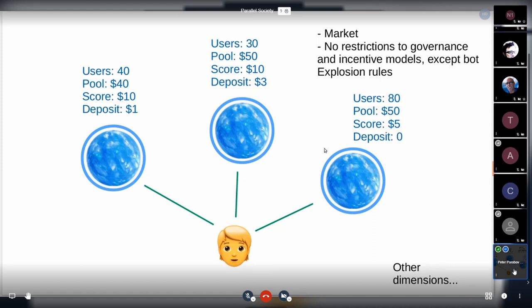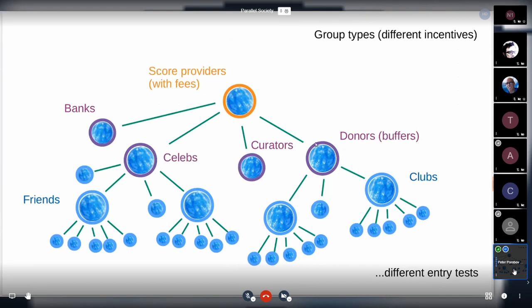This absence of restrictions creates a market where groups can choose any incentive or governance model that they like. Basically the only restriction that Upala imposes on groups is a bot explosion protocol - the group must provide an ability for a bot to explode and run away with the money.